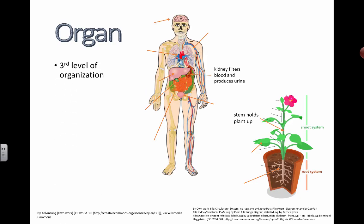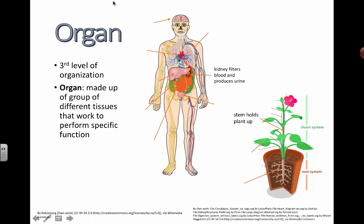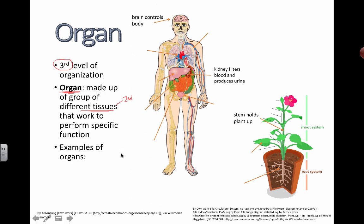Now we move to the third level of organization: the organ. An organ is made up of different tissues — notice how to make the third level, we're combining things from the second level. So an organ is a group of different tissues that work together to perform a specific function. You can probably name a bunch of these just by looking at a diagram of the human body.